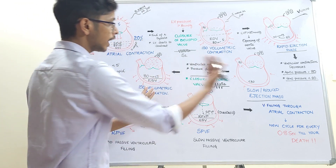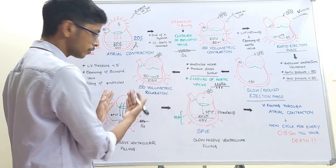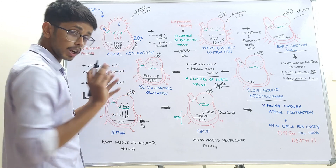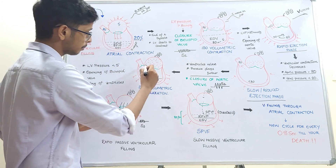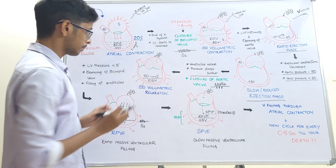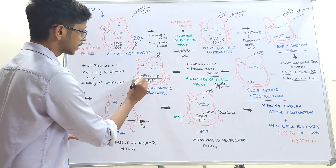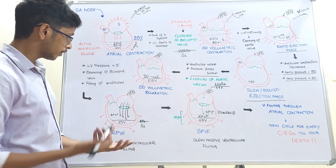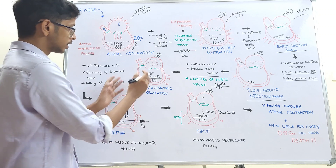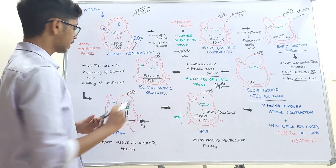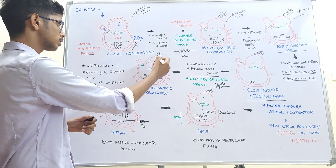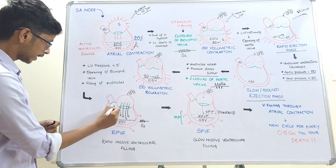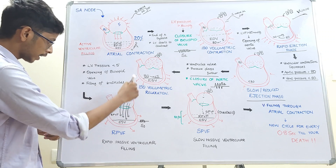Now the ventricle keeps relaxing in a closed chamber — the aortic valve has closed and the bicuspid valve has been closed for some time. This is isovolumetric relaxation. The ventricular pressure drops from 80 mmHg to 5 mmHg during this phase. During isovolumetric relaxation, the atria continue to act as a reservoir. When the left ventricular pressure drops below 5 mmHg, the bicuspid valve opens and the ventricle starts filling.